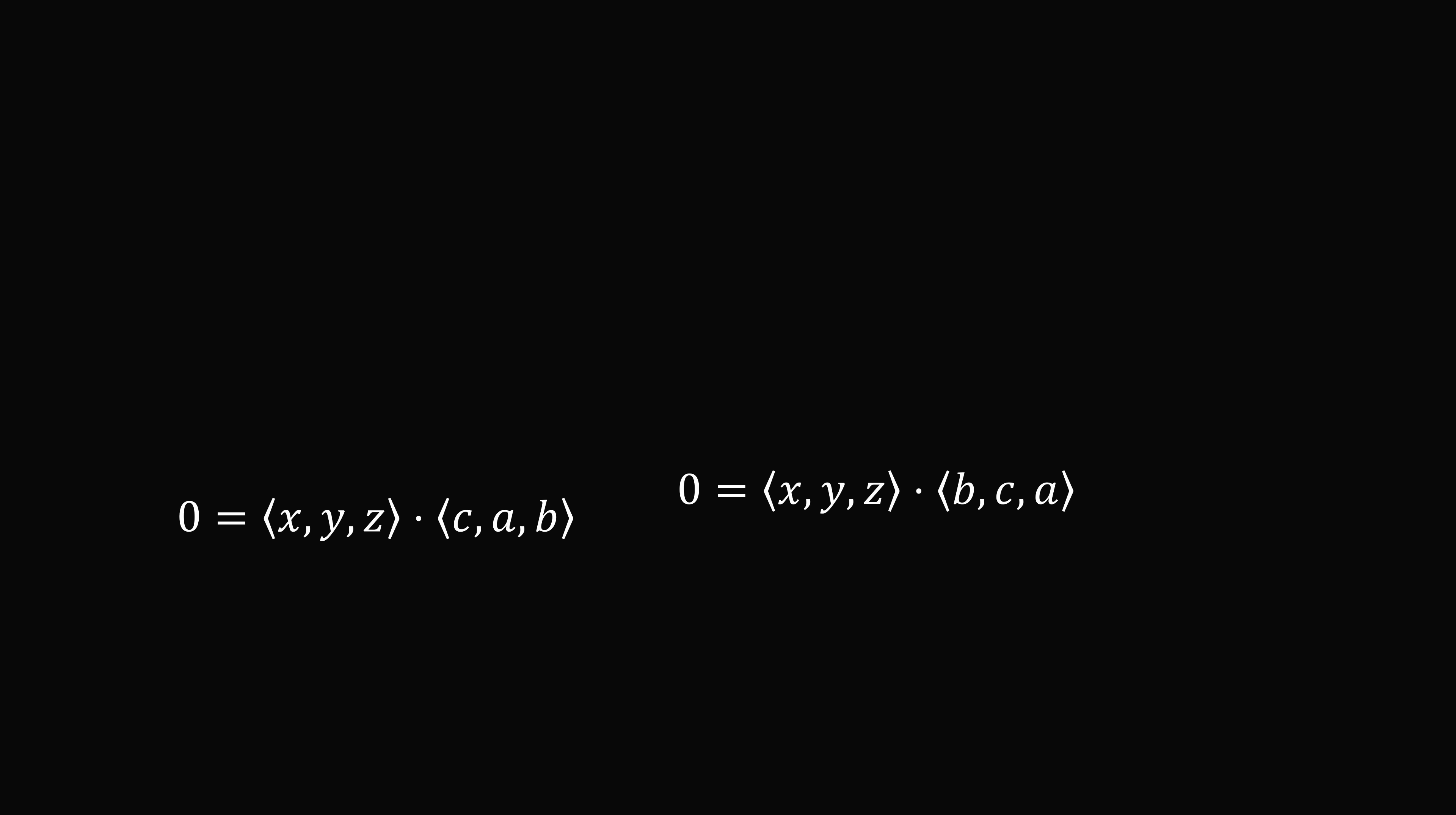Now let's focus on just these two equations. Notice from the first equation, we have the vector (x, y, z) is orthogonal to the vector (c, a, b). From the second equation, we have the vector (x, y, z) is orthogonal to the vector (b, c, a). We want to solve for x, y, z. We need a vector that's mutually orthogonal to (c, a, b) and (b, c, a). How can we find such a vector? Well, there's an incredible tool we can use called the cross product.